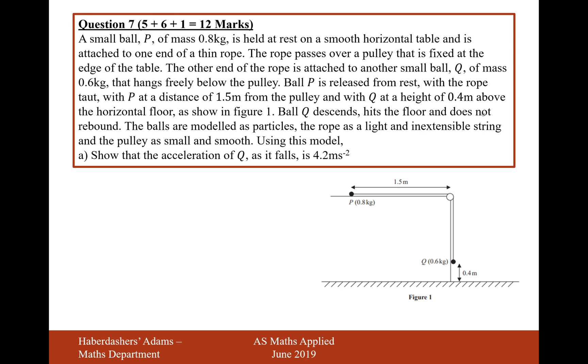Ball Q descends, hits the floor, and does not rebound. The balls are modelled as particles, the rope is a light and inextensible string, and the pulley is small and smooth. Using the model, show that the acceleration of Q as it falls is 4.2 metres per second squared.